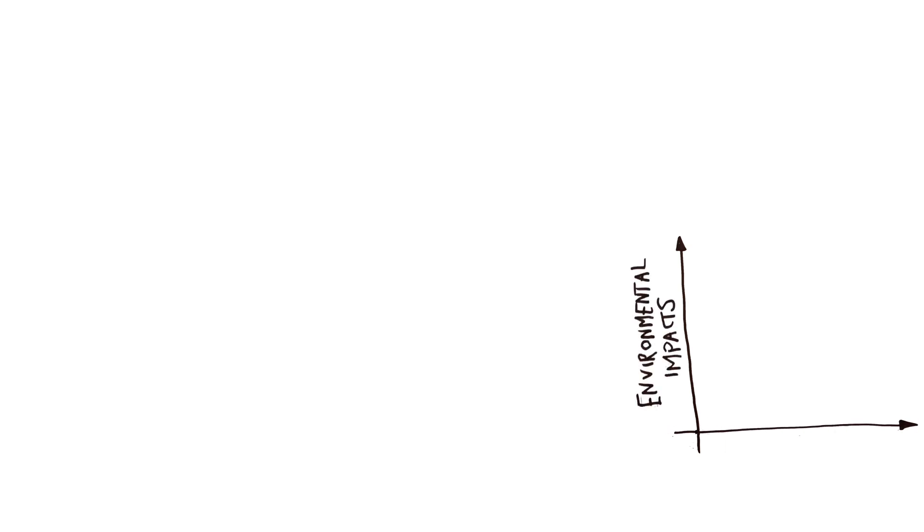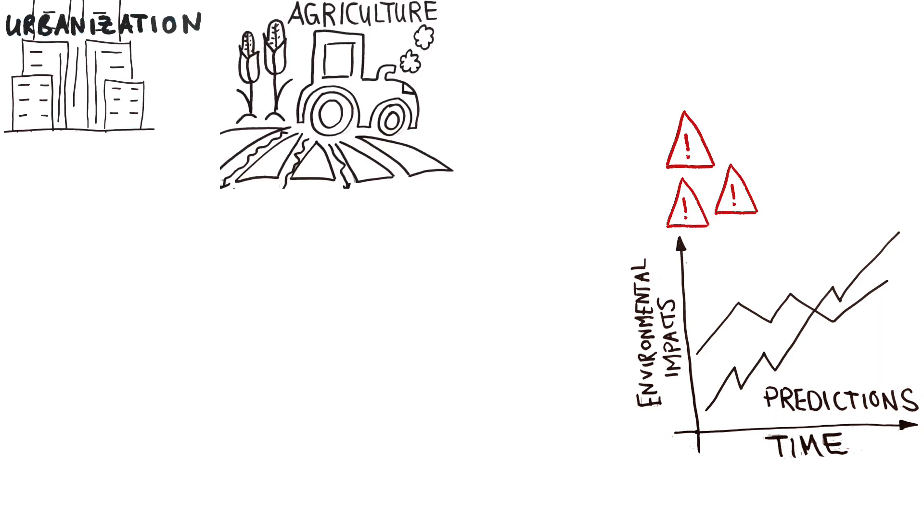Making educated predictions about how chemical use and risks will evolve over the coming decades is not easy, but by breaking the issue down to a series of smaller problems, we can build up our understanding of how these complex and connected factors may change.